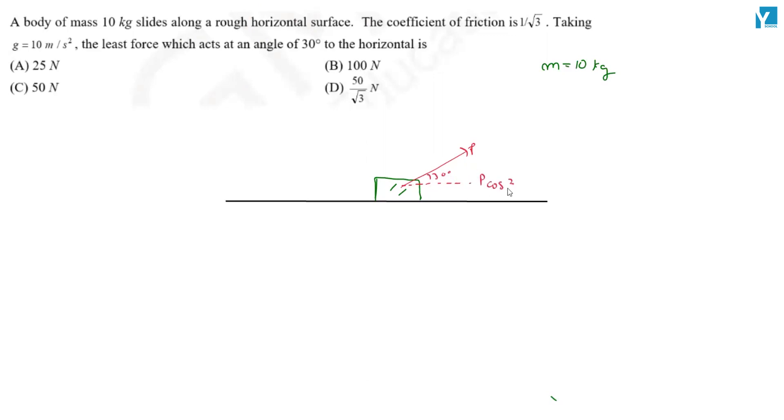So, this will be P cos 30 degrees. And this will be P sin 30 degrees. In the same direction, a friction force will be acting at the back, this way.